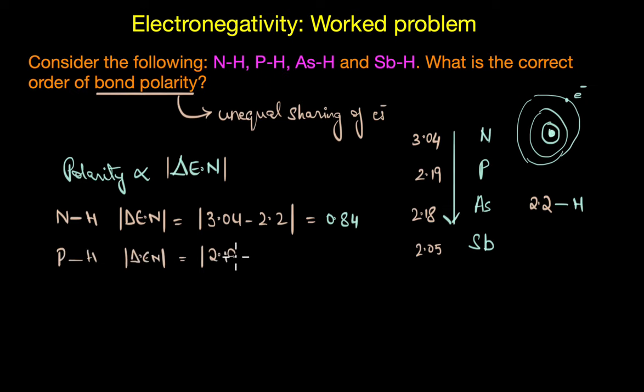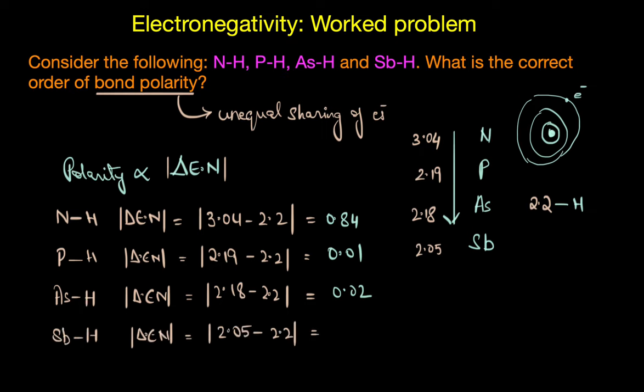And lastly we have Sb-H that is 0.15. So these are the values of the electronegativity difference between the atoms of all of these bonds. Based on this we can arrive at the correct order of bond polarity which is N-H greater than Sb-H greater than As-H greater than P-H. That is, N-H is the most polar and phosphorus-hydrogen bond is the least polar.